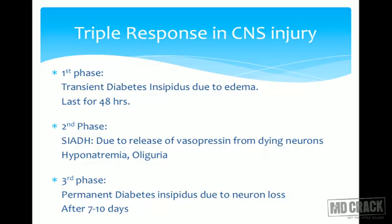The typical triple response seen in CNS injury is: initial period of diabetes insipidus lasting around 48 hours due to edema inhibiting vasopressin release; followed by second phase of SIADH due to vasopressin release from dying neurons with oliguria and hyponatremia; and replaced within 7-10 days by permanent diabetes insipidus because no neurons remain to produce vasopressin.